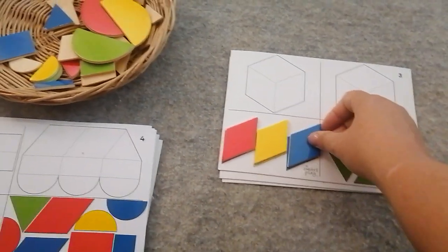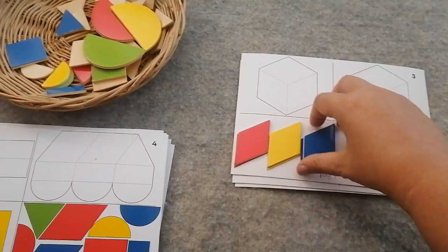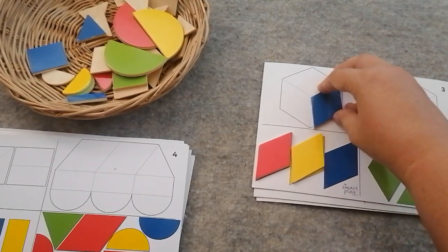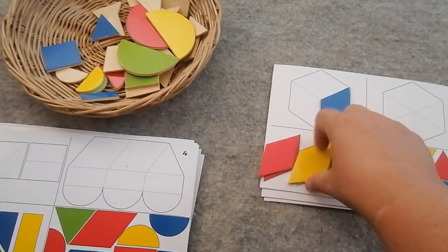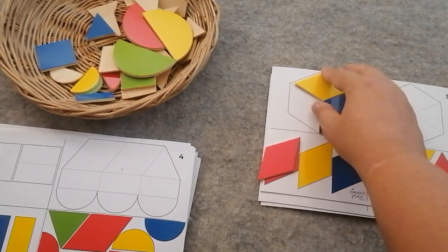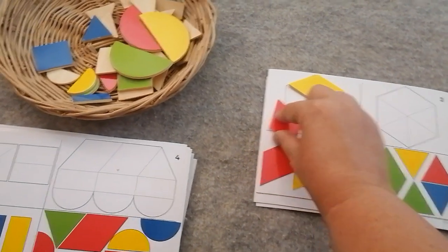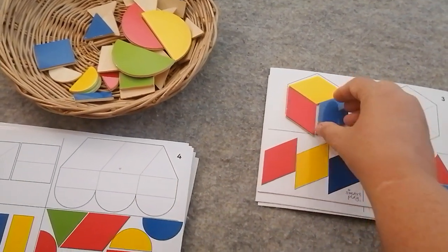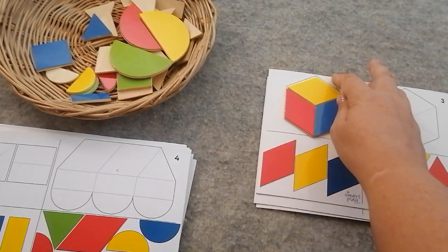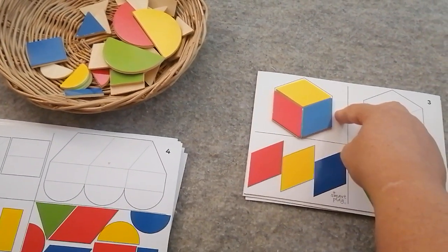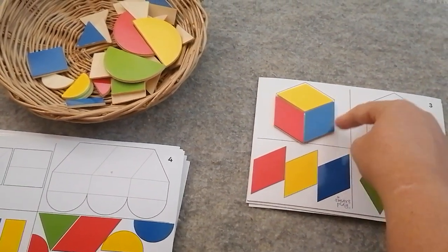And now if I put them together, they're going to make what looks like a cube, but it's also another shape. Let's see, how many sides does this shape have? One, two, three, four, five, six. And how many corners? One, two, three, four, five, six.